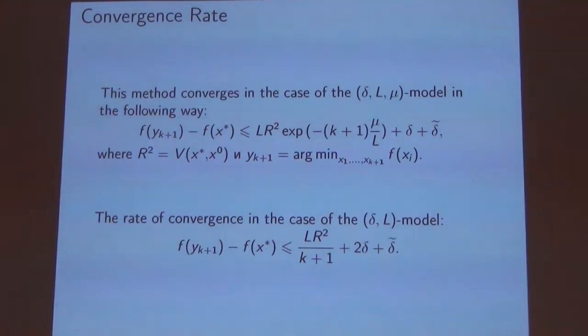It's important to mention that the method does not require the knowledge of the constant mu. Without any information whether our function is strongly convex or not, it will work faster. We can use it for a function that we know is convex, and if it's strongly convex it will work faster.